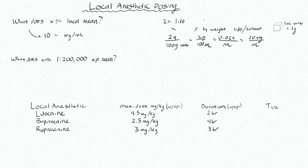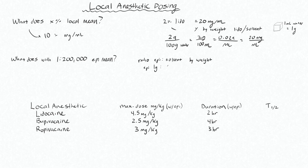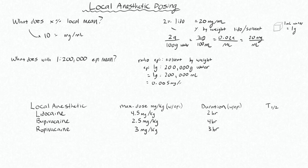So two percent lido is 20 milligrams per mil. Lots of local anesthetics for infiltration will also have some epi in them, something like one in 200,000 epi. You should be able to calculate how much epinephrine you're giving. That's a ratio for weight — for every one gram of epinephrine you have 200,000 grams of water, or 200,000 mils, which works out to 0.005 milligrams per mil or five mics per mil.